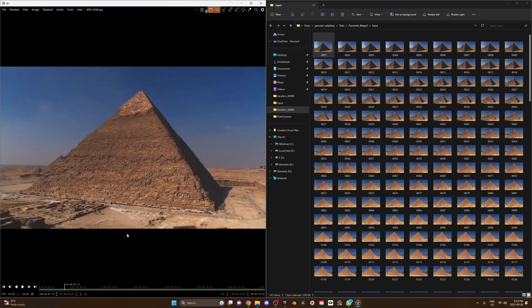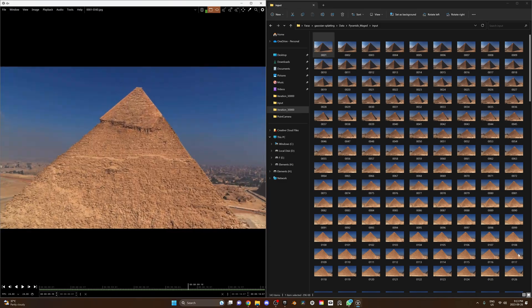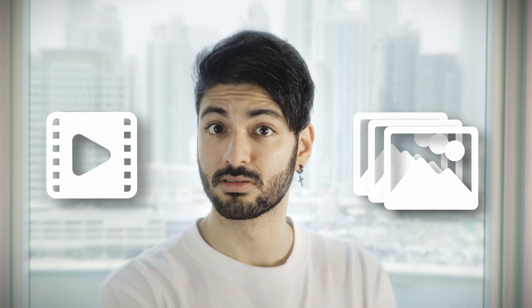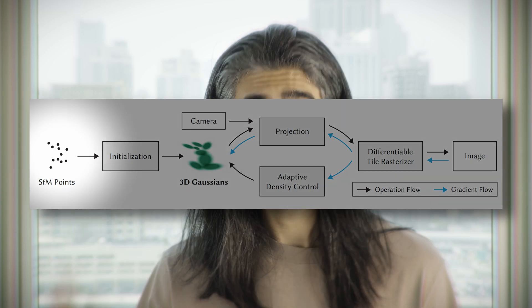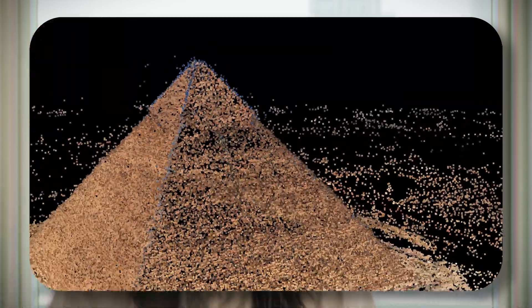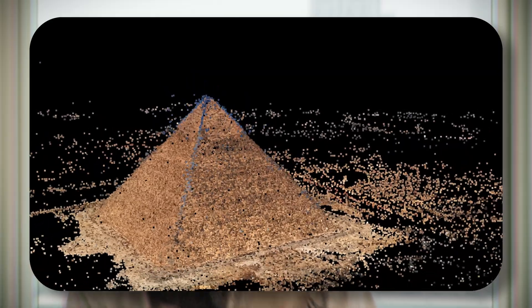So let's go and find out how it all works. First, we begin with a set of input photos taken at different angles from a subject. These input photos can also be extracted from a video as an image sequence. Next, using a mathematical method called Structure from Motion, the differences between these images are calculated to form the 3D point cloud.